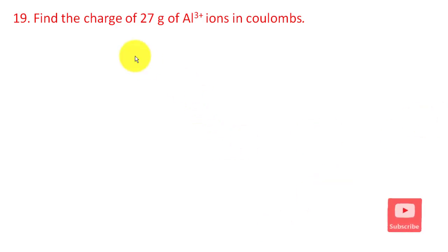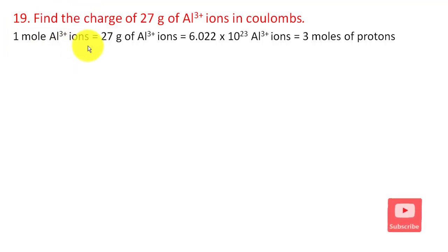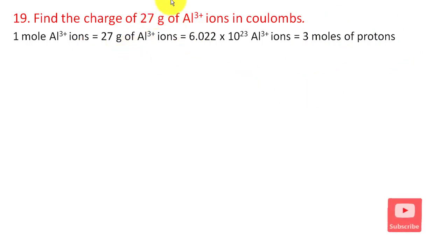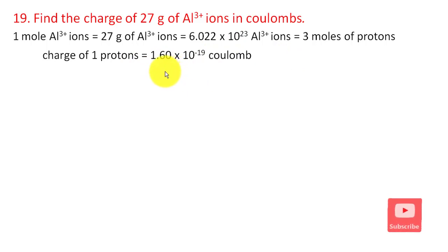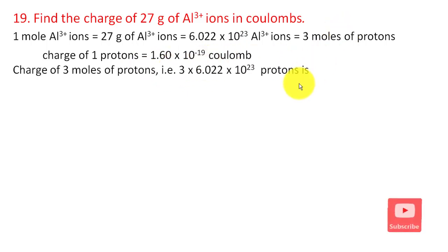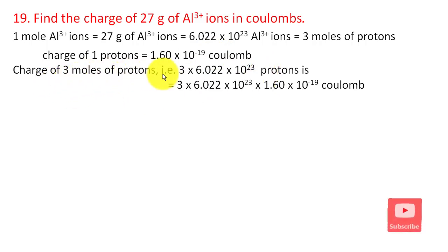Next: find the charge of 27 g of aluminum Al³⁺ ions in coulombs. 1 mole of Al³⁺ weighs 27 g (atomic weight of aluminum). That is 1 mole of Al³⁺, which carries 3 moles of proton charges. The charge of 1 proton is 1.60 × 10⁻¹⁹ coulombs. The total charge is 3 × 6.022 × 10²³ × 1.60 × 10⁻¹⁹, giving approximately 2.89 × 10⁵ coulombs.